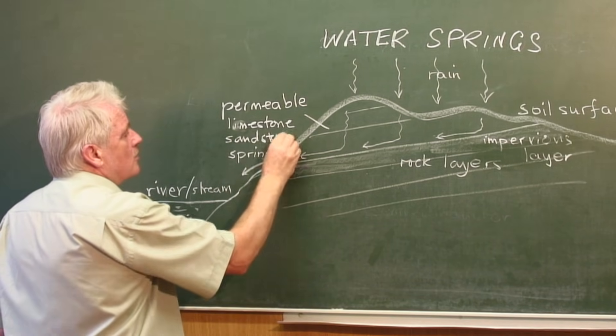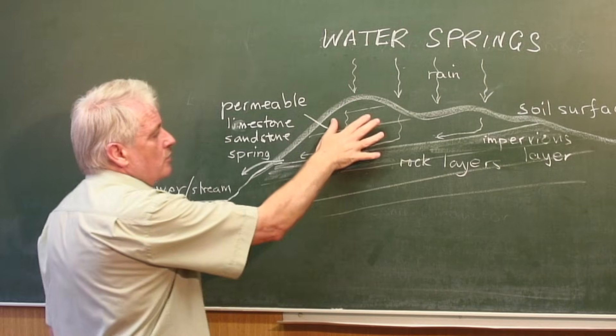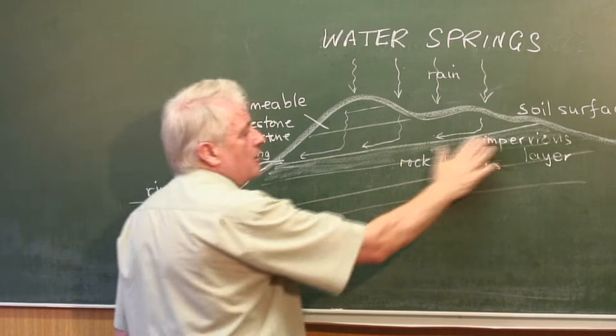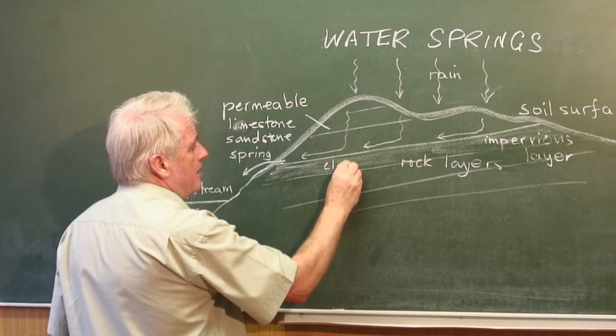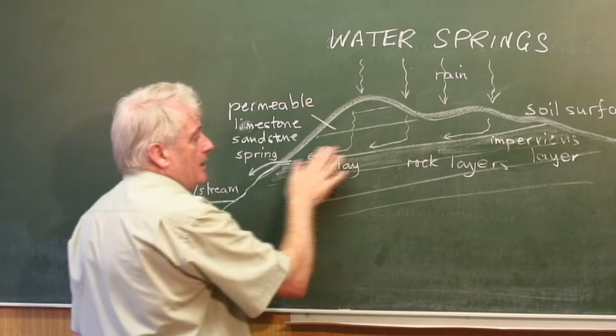So with these rocks, the water soaks through the rocks until it reaches a layer of, say, clay. This could be clay. And once it's reached that clay, it can go no further.